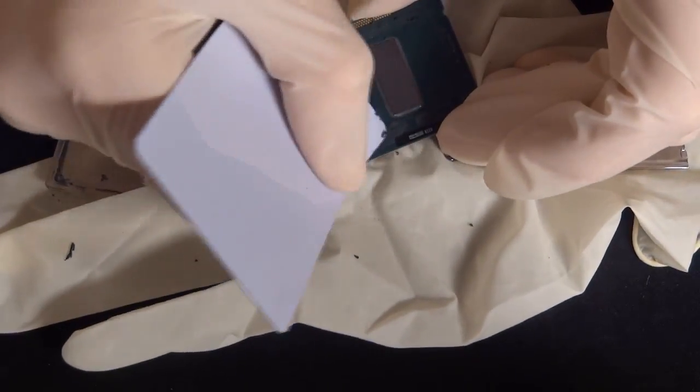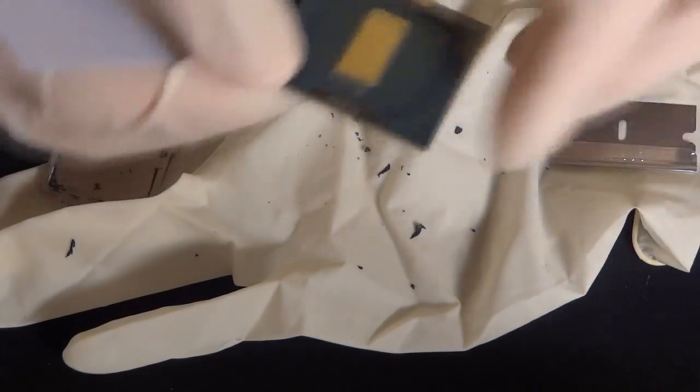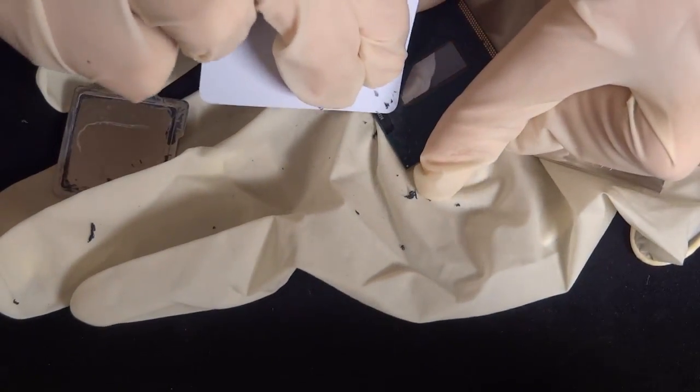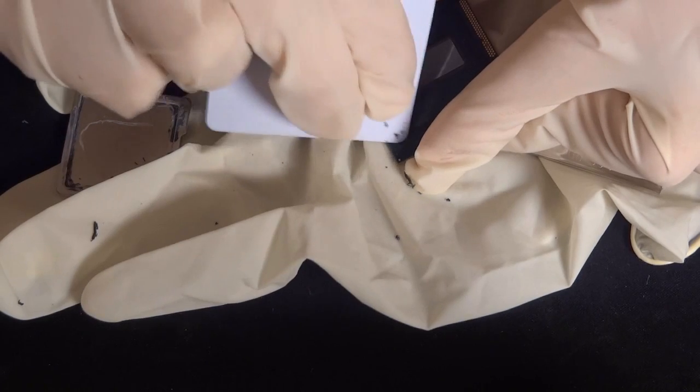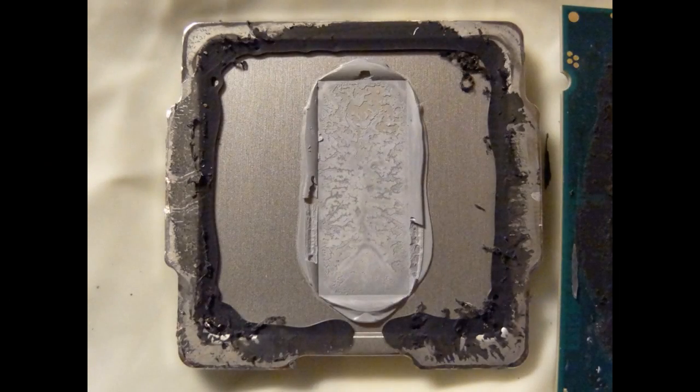In terms of putting it back, when you put it back to the motherboard you basically put the PCB on the socket with the IHS on it, and when you come to clamp it down you just have to hold your hand on the IHS whilst clamping it down.